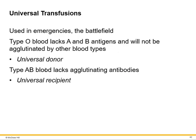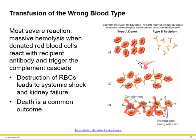The universal donor is O negative, and AB has all the antigens so they have none of the agglutinating antibodies — AB positive is the universal recipient. If you receive the wrong blood type, the donor cells have the antigen and the recipient's blood has the antibodies. In a transfusion you're given packed red blood cells with no antibodies. The donor antigens and recipient antibodies clump together, which attracts complement and then lyses the cells. Here is an animation showing what's happening in Type 2 hypersensitivity.